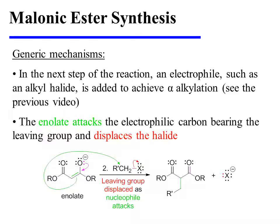In the next step of the reaction, an electrophile such as an alkyl halide is added to achieve alpha alkylation. There is more detail on alpha alkylation in the preceding video on that topic. The enolate attacks the unhindered electrophilic carbon bearing the leaving group and displaces the halide in the process, forming a new carbon-carbon bond.